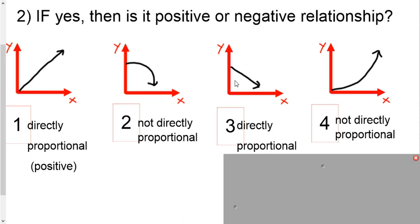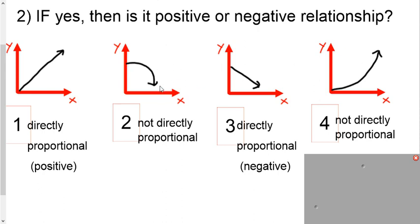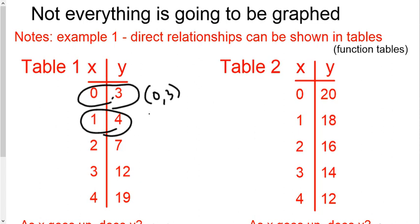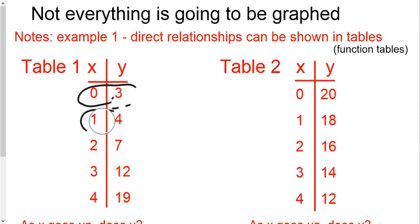Now we still need to look at what's happening if we see a table. Not everything is going to be graphed — sometimes they'll just give you a table. Understand that the x and y values together become an ordered pair, so (1, 4) would be graphed as the point 1, 4. Then we take a look to see what's happening with the y value as the x value increases.